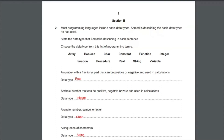The second description is a whole number that can be positive, negative or 0 and used in calculations. As said for the previous description, it's going to be integer.